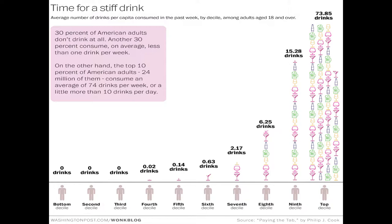This slide shows data from the Washington Post that examines how much we drink based on deciles. 30% of Americans don't drink at all — they're found at the bottom of this infographic. The top 10% of drinkers drink about 10 drinks per day. If we were in the 9th decile, that equates to about 15.28 drinks a week, basically 2 drinks a day. You would consume about 800 drinks every year — that's a lot of drinking, and it certainly adds up.